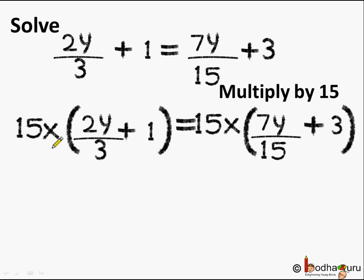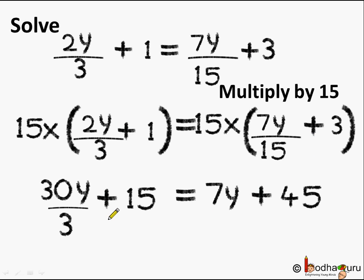So let us multiply by 15. 15 multiplied by 2 by 3y plus 1. On the RHS 15 multiplied by 7 by 15y plus 3. What do we get?